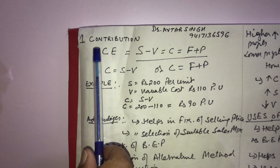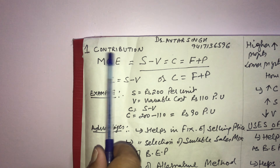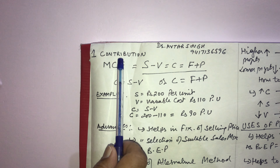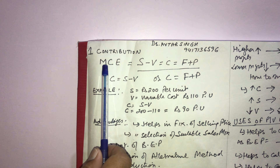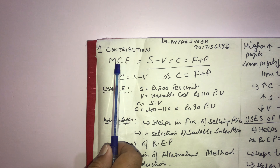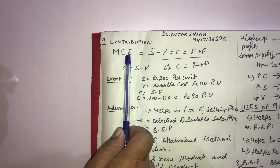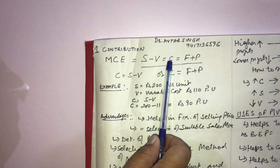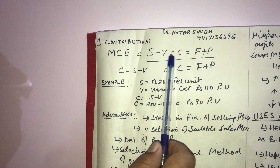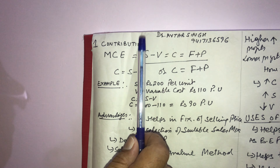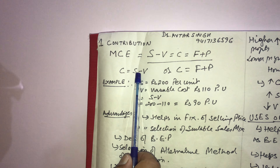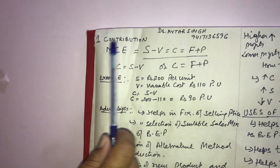There are certain important terms which need attention. Before going through them, we must know what the marginal cost equation is. MCE — the marginal cost equation: S minus V is equal to C, which is equal to F plus P. There are two sides: left hand side C equals S minus V, and right hand side C equals F plus P.